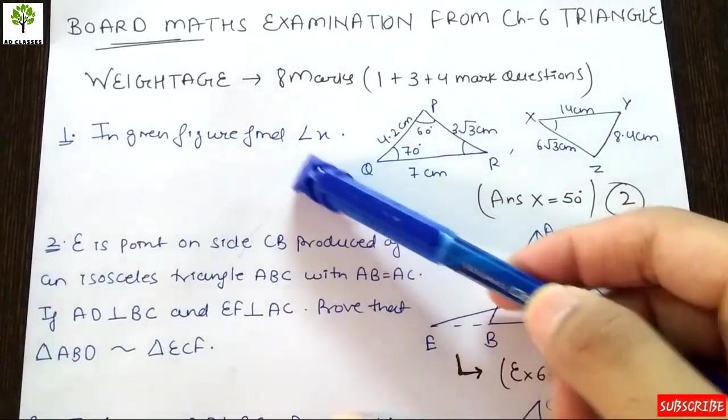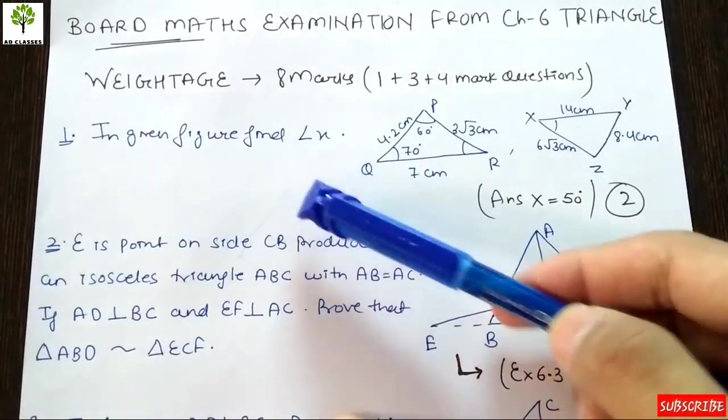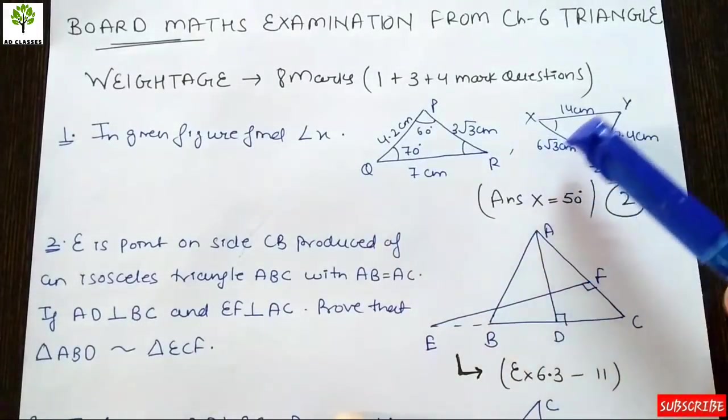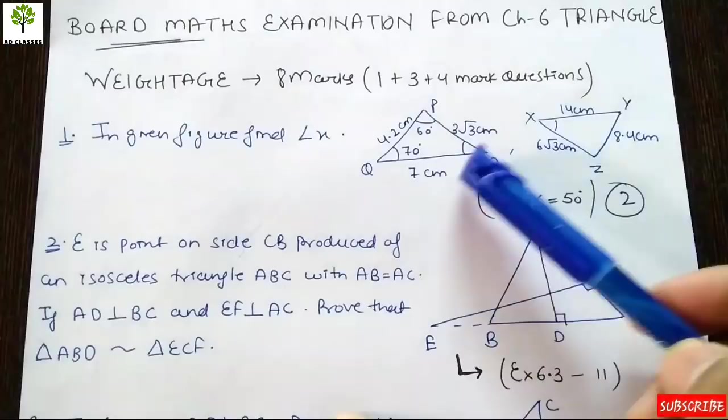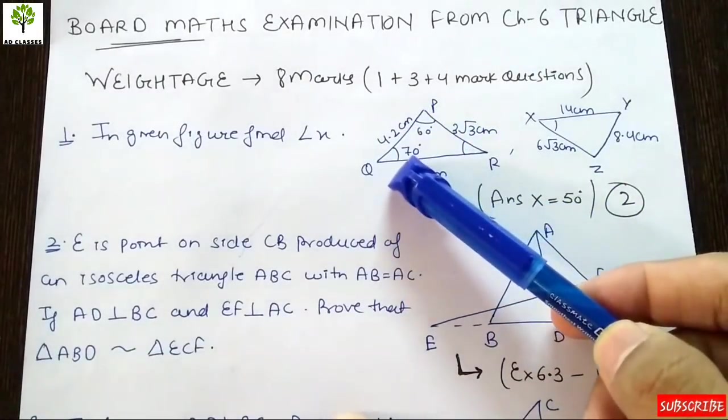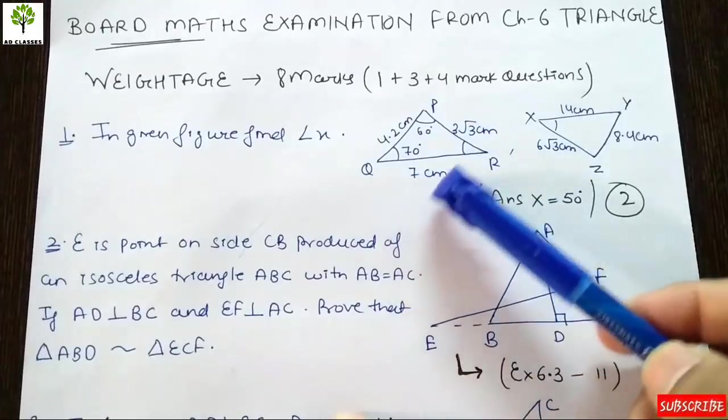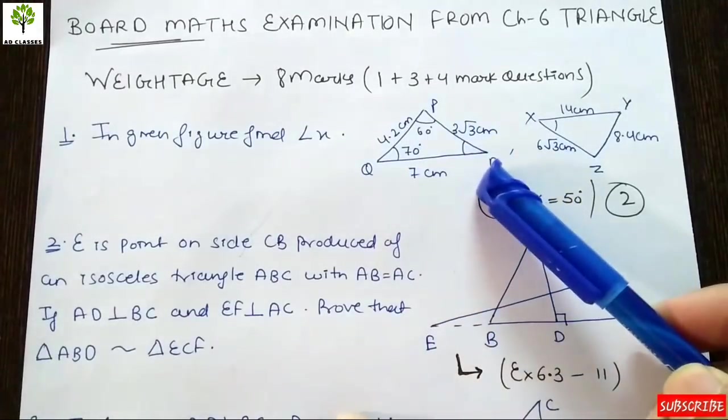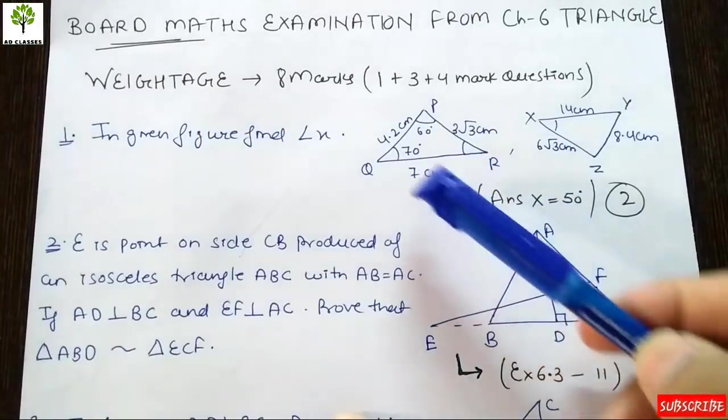First question: In the given figure, find angle x. We have two triangles PQR and XYZ. Compare them with the sides: PQ is 4.2 cm, angle Q is 70 degrees, angle P is 60 degrees, PR is 3 root 3 cm, and QR...